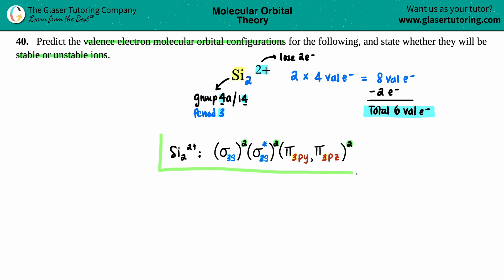The second part of the question is stating whether this is actually a stable or unstable ion. Is Si₂²⁺ stable or unstable? Stability with molecular orbital configurations can be found with bond orders. We're going to solve for a formula and we hope that the bond order is not zero. If it is, that means no bond will be formed—zero, no bond—and if no bond is formed it's unstable.